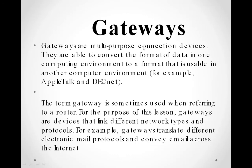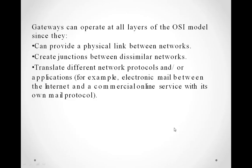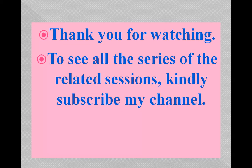Gateways are multi-purpose devices: they connect different networks together and provide translation as well. Here you can see one network with a certain configuration and another network with a different configuration, connected by a gateway. The gateway has software installed that provides protocol conversion, operates at all seven layers of the OSI model, and translates different network protocols to the required protocol level.